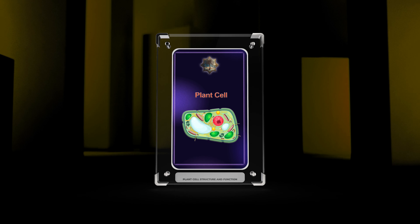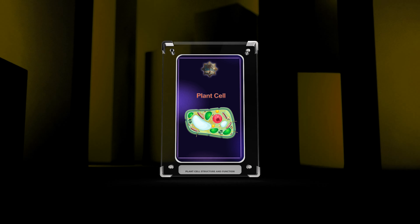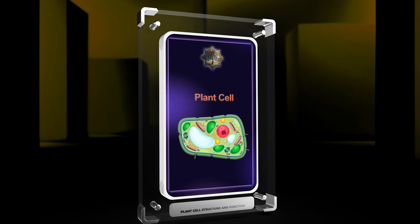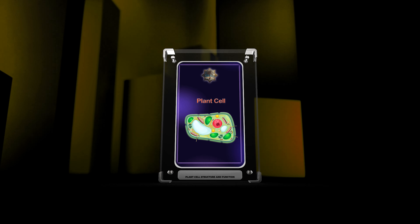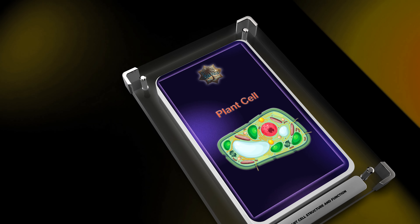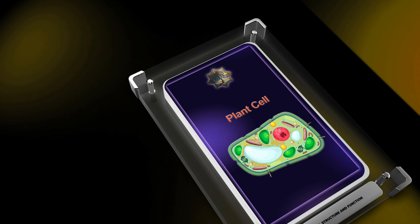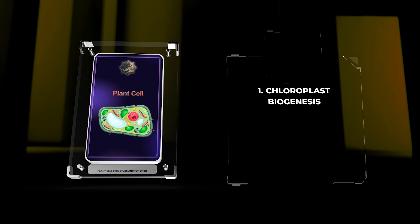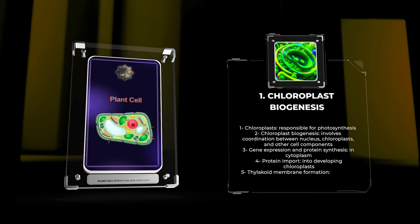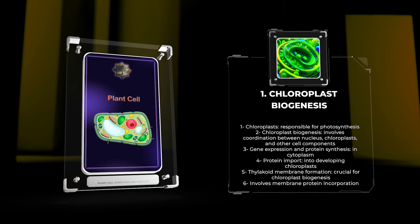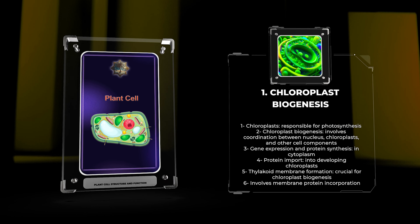These topics include chloroplast biogenesis, vacuolar trafficking, plasmodesmata, secondary cell wall formation, calcium signaling, plant hormones, nitrogen fixation, plastid development, cell polarity in plants, cell cycle regulation, signaling in plant defense, and plastid-nuclear communication. Each topic will be explored in detail, providing a comprehensive understanding of the processes involved. So, let's dive into this extraordinary world of cellular biology and uncover the intricate mechanisms within.